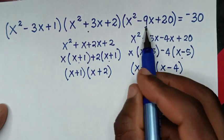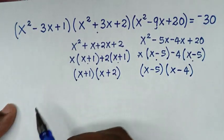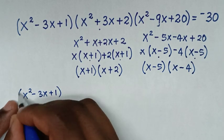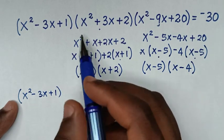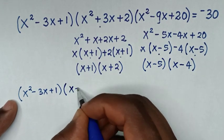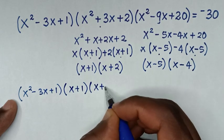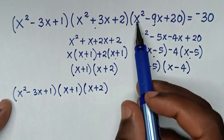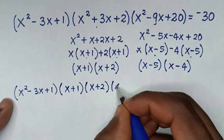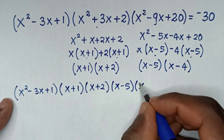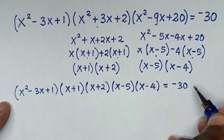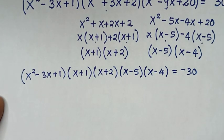Now our equation becomes: (x²-3x+1)(x+1)(x+2)(x-5)(x-4) = -30.